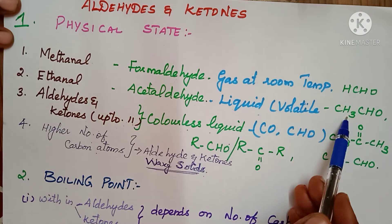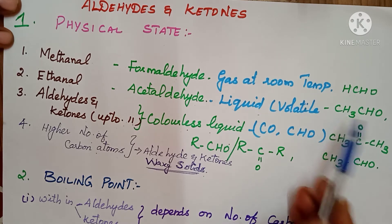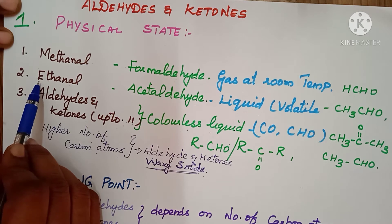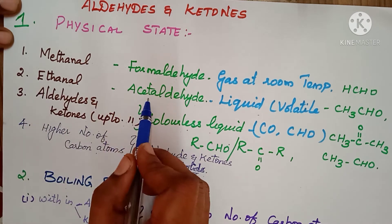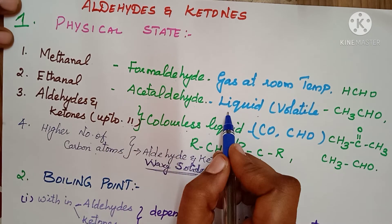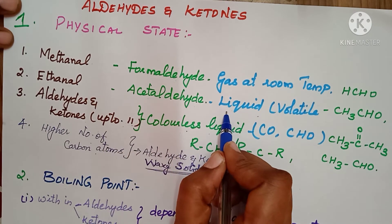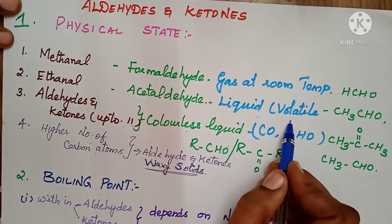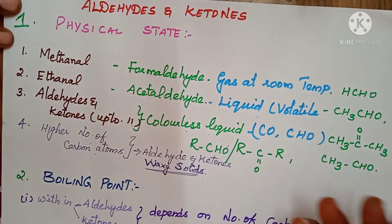The second one is acetaldehyde, with 2 carbon atoms. Its IUPAC name is ethanal. Acetaldehyde is a liquid — a volatile liquid, meaning it will easily evaporate.